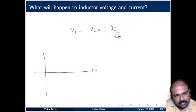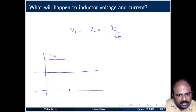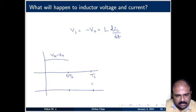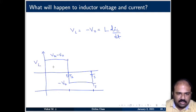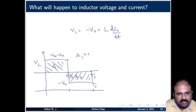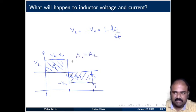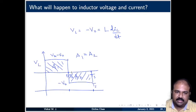During the switch-on period the inductor voltage was Vin − V0 for duration dTs. From dTs to Ts the inductor voltage is −V0. The average voltage across the inductor must be 0, so the area under the positive portion (A1) must equal the area under the negative portion (A2). This is the volt-second balance across the inductor, strictly following conservation of energy.